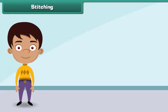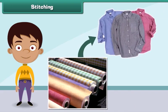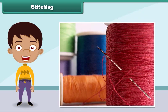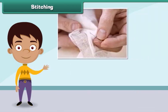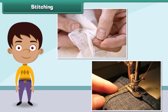Stitching is the process by which fabrics are converted into clothes. It involves sewing a fabric with needle and thread. In olden days, stitching was done by hand, but nowadays stitching is done with machines.